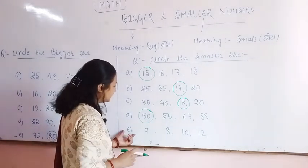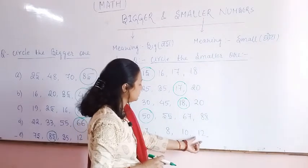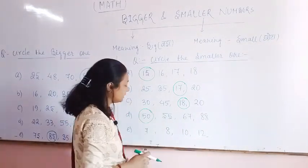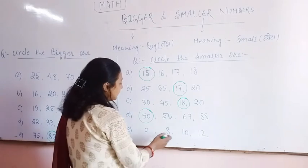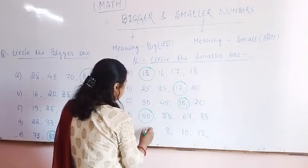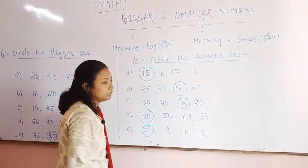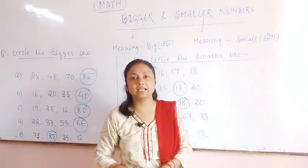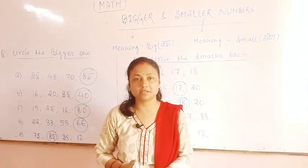The last question is: 7, 8, 10, and 12. Which one is the smaller? 7 is the smaller one. So this covers all the bigger and smaller number related questions.